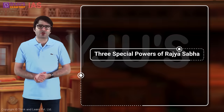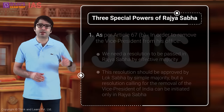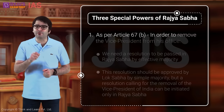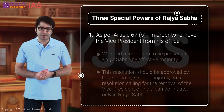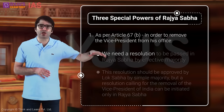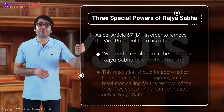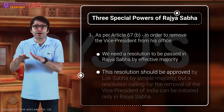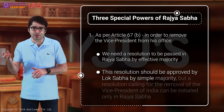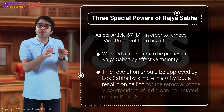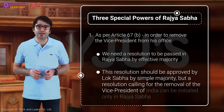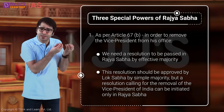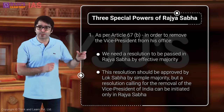Three special powers of Rajya Sabha. Power Number 1: Article 67, Clause B. In order to remove the Vice President from office, a resolution must be passed in Rajya Sabha by effective majority, and this resolution should be approved by Lok Sabha by simple majority. However, a resolution calling for the removal of the Vice President can be initiated only in Rajya Sabha — this is one exclusive special power of Rajya Sabha.